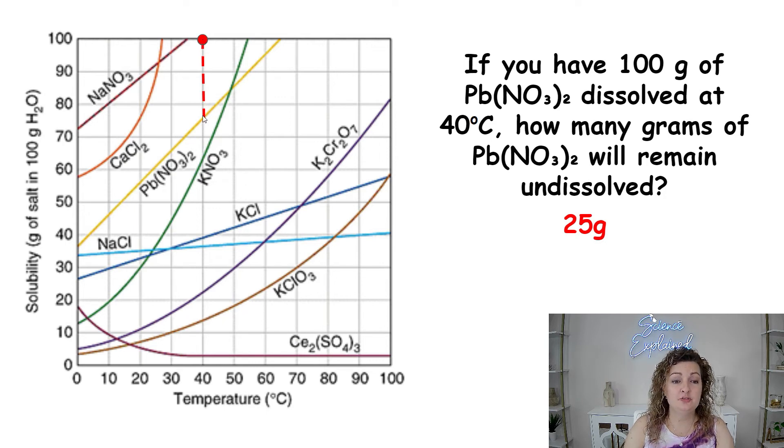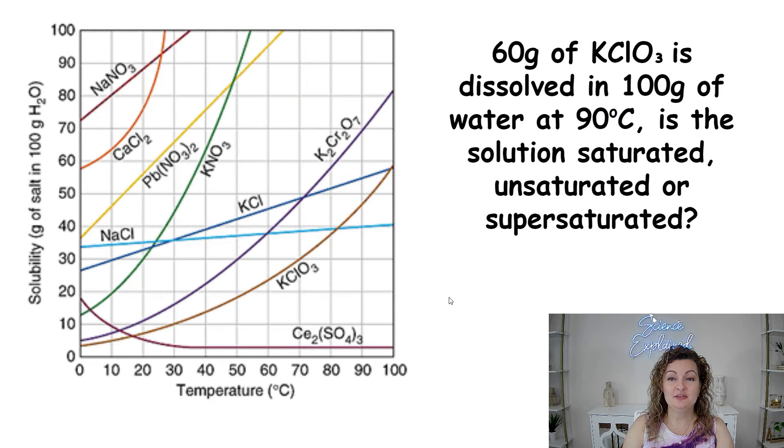It's asking us how many grams will remain undissolved. Well, the saturation point at 40 degrees for Pb(NO3)2 is right here. And this is about 75 grams. But we have put in 100 grams. So how much will sit at the bottom of the beaker? It's going to be 25. You just subtract 100 minus that 75. And that's how much will remain undissolved at the bottom of your beaker. Let's try another one.